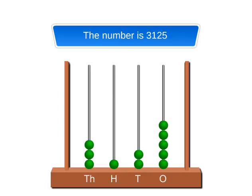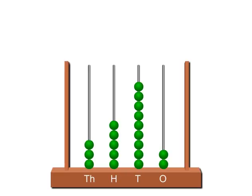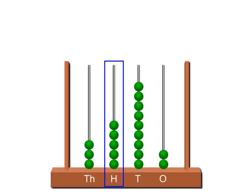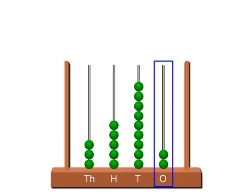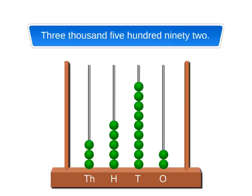Let us now learn to read numbers and number names. Look at this abacus. It has 3 beads in the thousands spike, 5 beads in the hundreds spike, 9 beads in the tens spike, and 2 beads in the ones spike. So we can name it as 3,592.